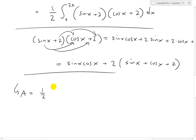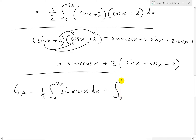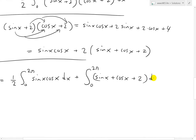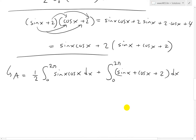We can write the area as (1/2) times the integral from 0 to 2π, which we break into two parts. The first part is (1/2) times the integral from 0 to 2π of sin(x)·cos(x) dx. The second part has a factor of 2 multiplied by 1/2, so the two's cancel, leaving just the integral from 0 to 2π of [sin(x) + cos(x) + 2] dx.